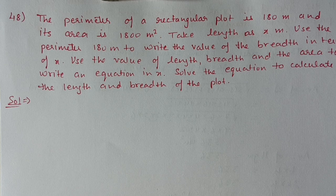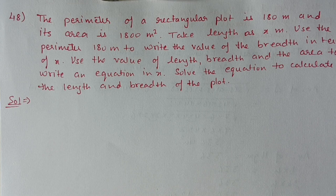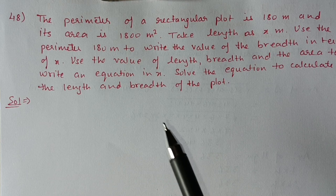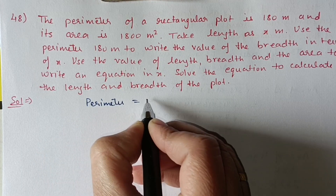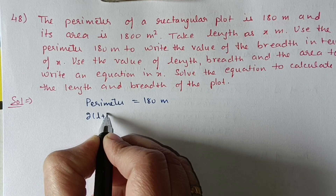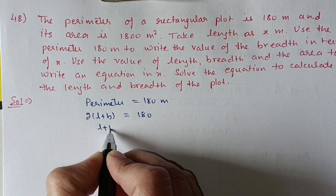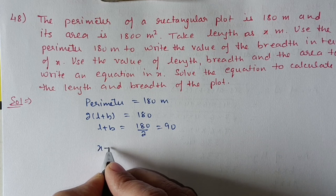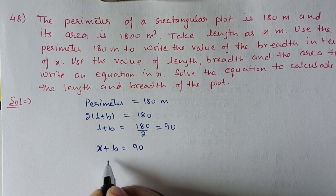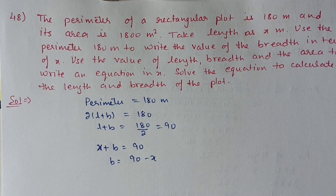Next, question number 48. The perimeter of a rectangular plot is 180 m and its area is 1800 m². Take length as x. Using perimeter: 2(l + b) = 180, so l + b = 90. With length = x, breadth = 90 - x.